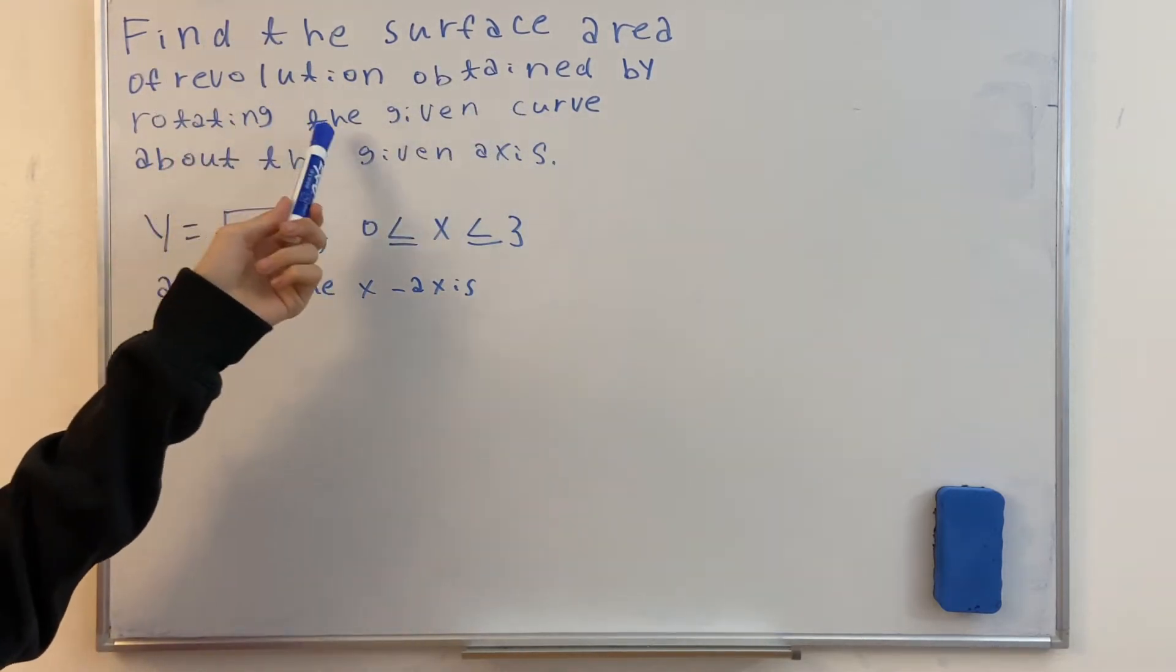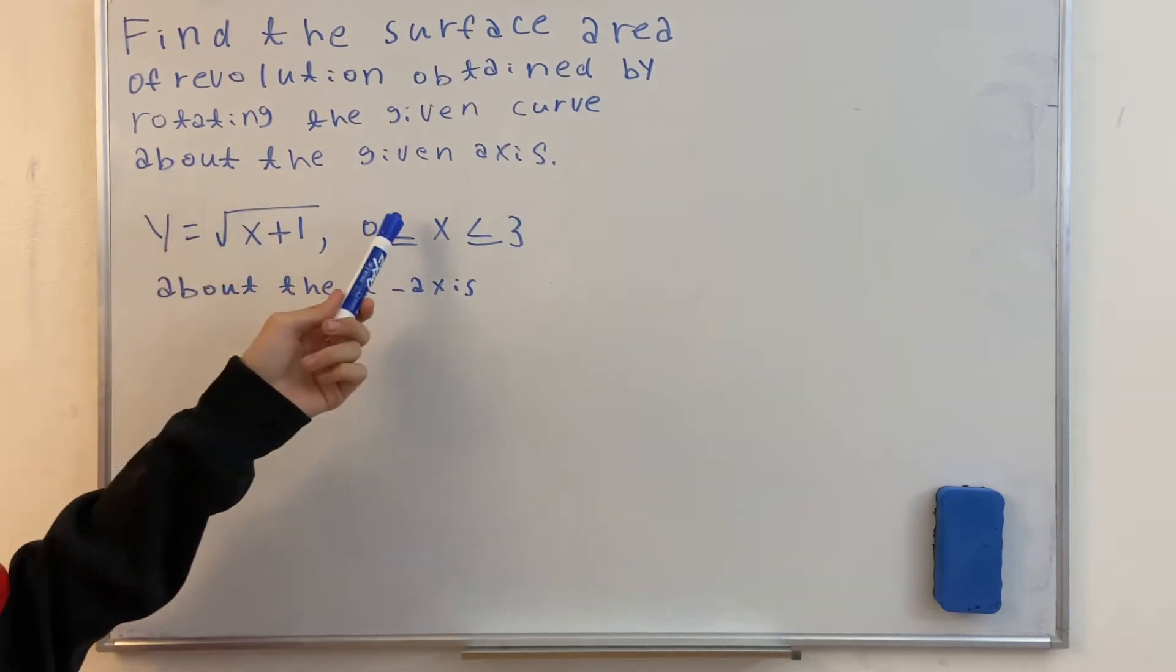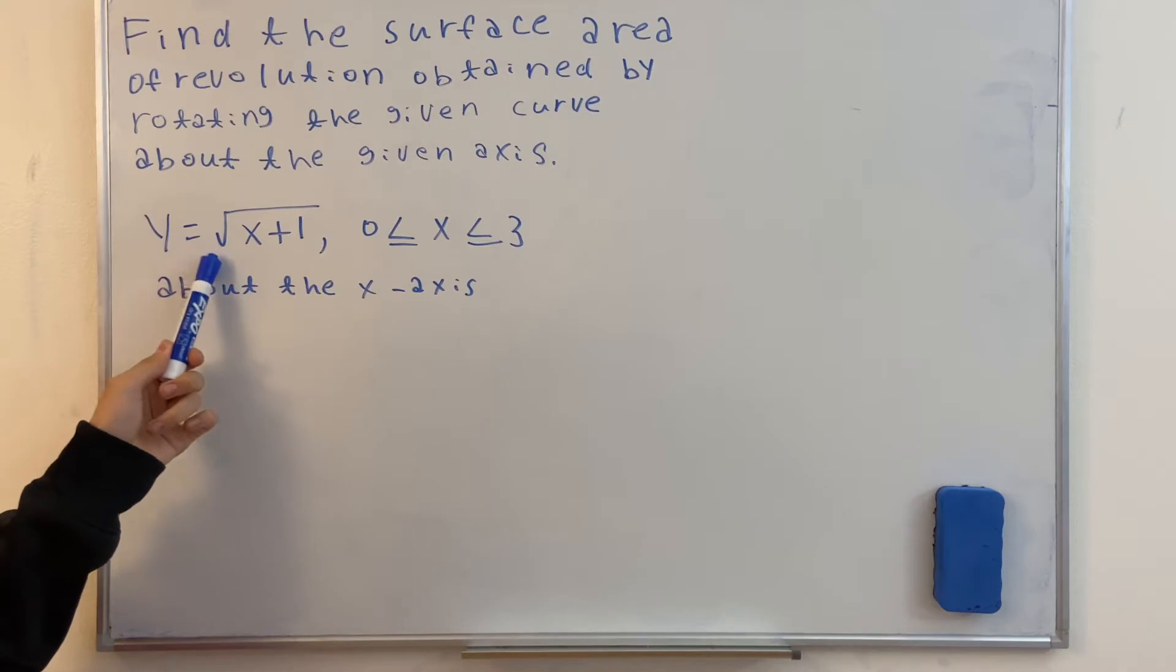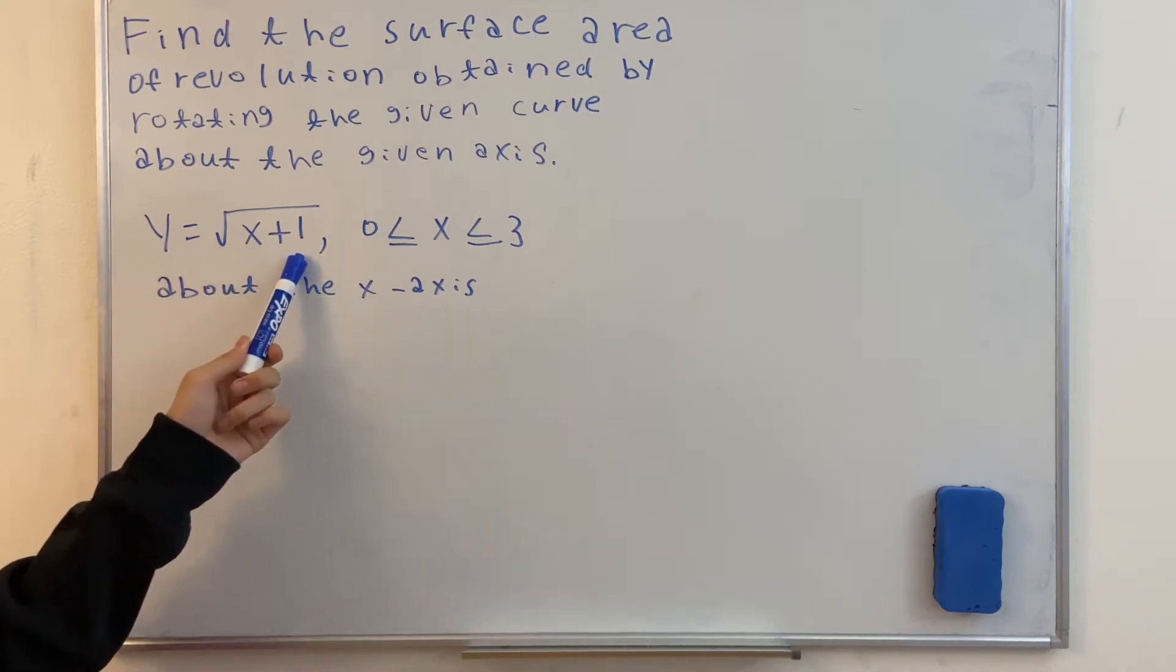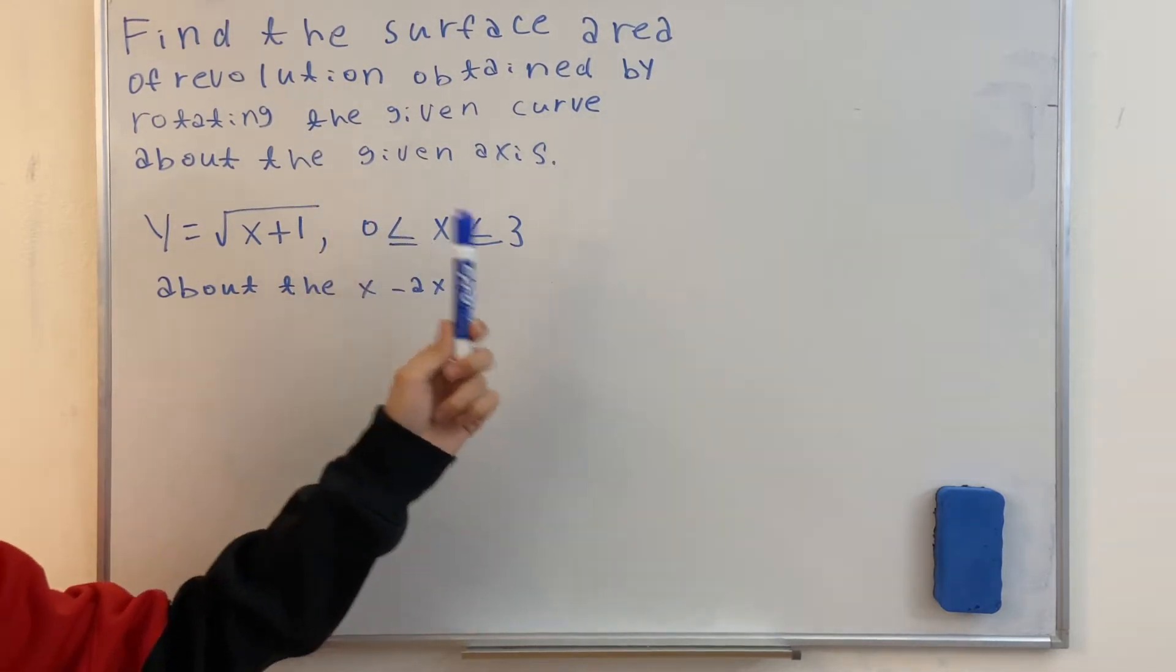Find the surface area of revolution obtained by rotating the given curve about the given axis, which the equation is y equals square root of x plus 1, and it will spin around the x-axis between the value of x equals 0 to 3.